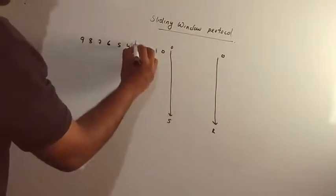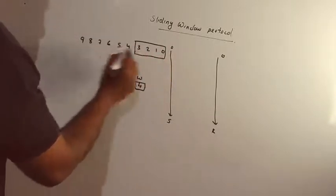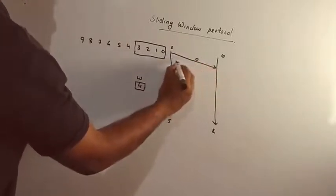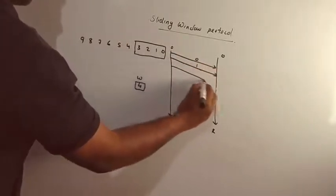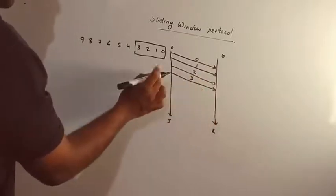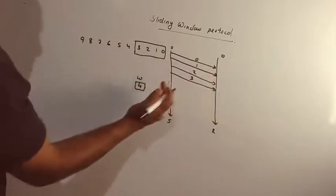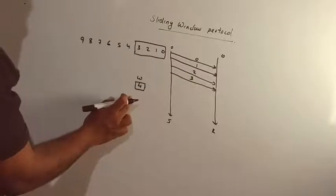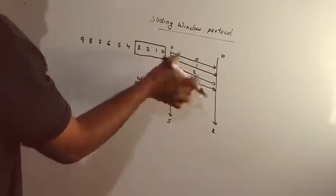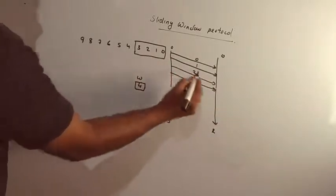That means if we set the window size to 4, we have 4 frames: 0, 1, 2, 3. We send the first frame, second frame, third frame, and fourth frame. We will receive an acknowledgement. When we receive acknowledgement for the first frame, frame 0 is acknowledged.